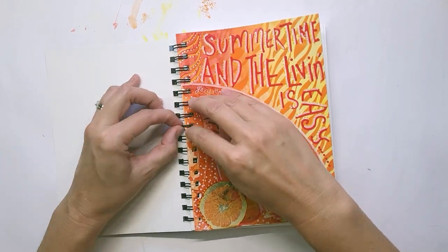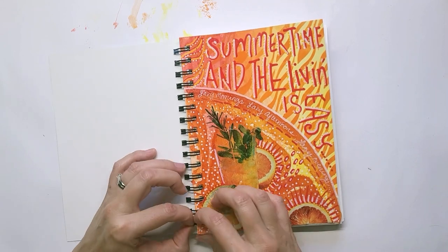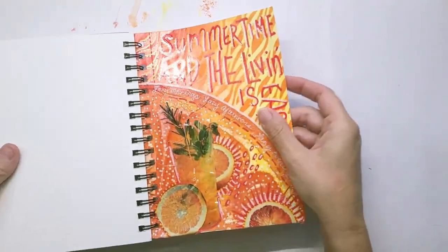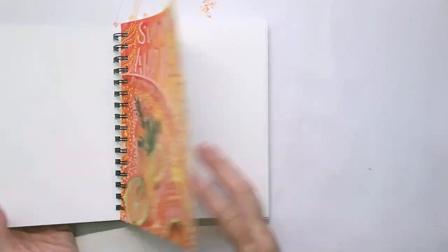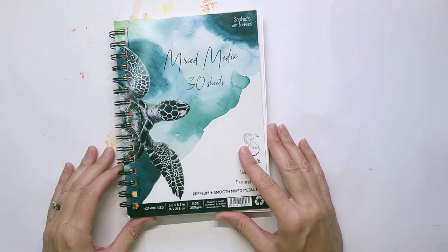Just be kind of gentle and as you can see it stays in very nicely. You can jiggle it around, it's not going to fall out. Now you've got an art journal with removable pages.